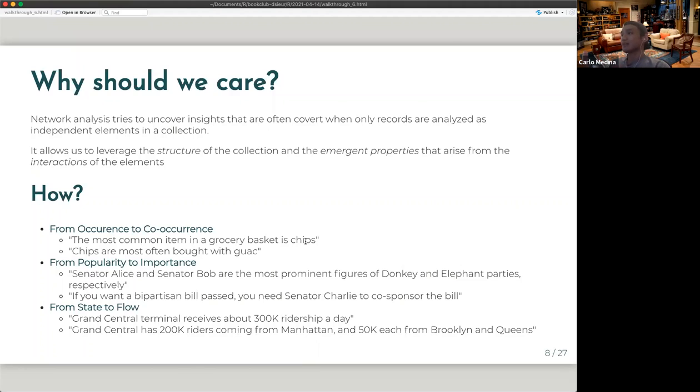For example, if you look at voting records of countries in Europe, we would not see, let's say, UK often votes with Germany on a given proposition if you only look at UK's own voting records. So how do we expand this? So here are three things of how I bucket this. So we move from occurrence to co-occurrence, which I've already talked about. For example, an analysis for occurrence would be what is the most common item in a given grocery basket. So let's say it's chips. Then we move to co-occurrence. So chips are most often bought with guacamole.